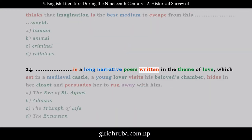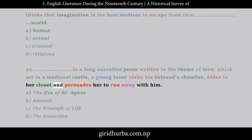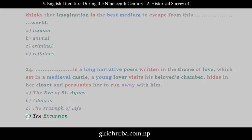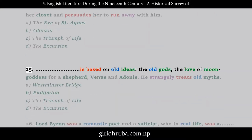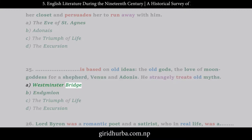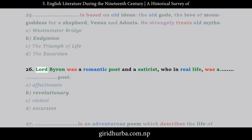Question 24: __ is a long narrative poem written in the theme of love, set in a medieval castle; a young lover visits his beloved's chamber, hides in her closet, and persuades her to run away with him. A. The Eve of Saint Agnes, B. Adonais, C. The Triumph of Life, D. The Excursion. Question 25: __ is based on old ideas — the old gods, the love of moon goddess for a shepherd, Venus and Adonis — and strangely treats old myths. A. Westminster Bridge, B. Endymion, C. The Triumph of Life, D. The Excursion.